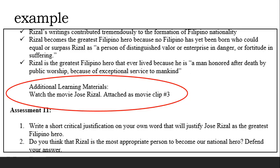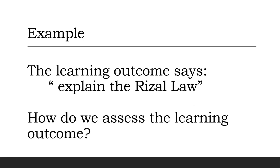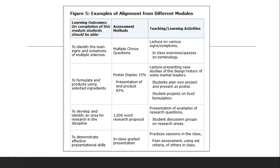The last part is the assessment. In every module, there should be an assessment, and it should be aligned to the learning outcomes. For example, if the learning outcome says 'explain the Rizal Law,' then at the end of the topic the student should be able to explain the Rizal Law — because that is your learning outcome. We have samples here to show how to create alignment between the learning outcome and the assessment.